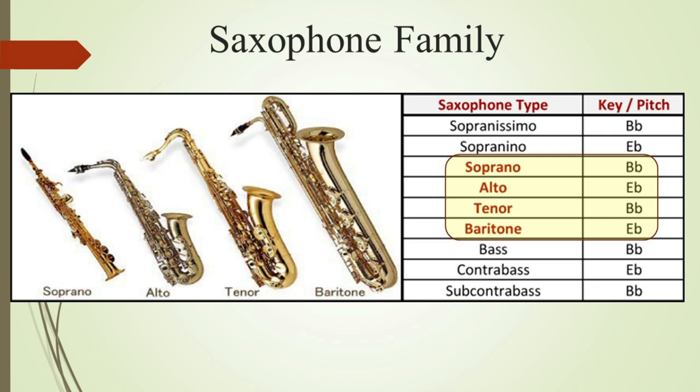First saxophone is soprano. The soprano is the smallest in size. This saxophone can be either curved or straight and it is in the key of B flat. It's known for being a bit more difficult to play than the alto, making it more ideal for intermediate or advanced players.